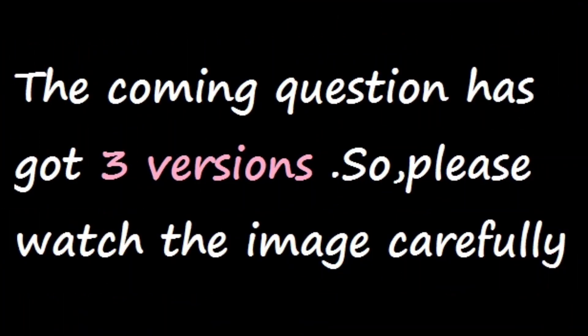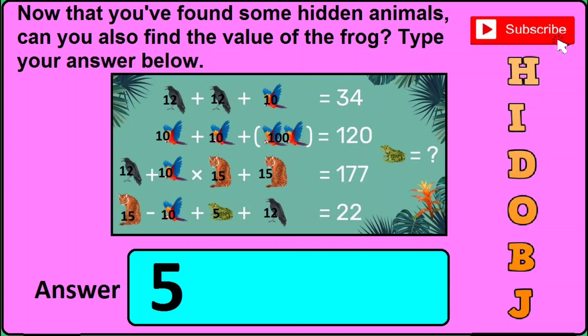Now question number 19 has got three different versions or types, so you need to read the question, watch the image, and then type or click the answer I will be showing in the answer box. In version one, it is asked: now that you have found some hidden animals, can you also find the value of the frog? Type your answer below. If you find this sort of image, the correct answer will be 5.